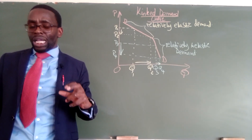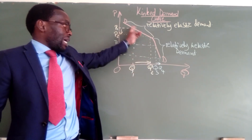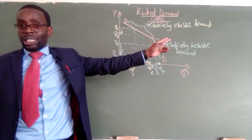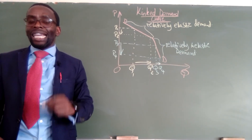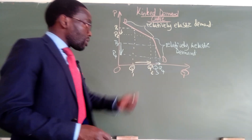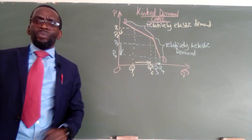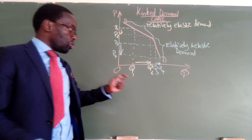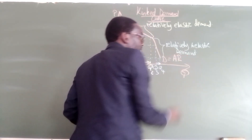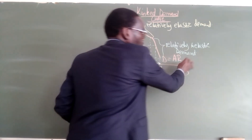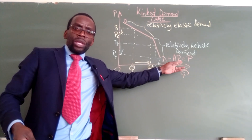So the demand curve faced by an oligopoly firm consists of two demand curves joined together: the top one giving us relatively elastic demand and the bottom one illustrating relatively inelastic demand. Our demand curve D is equal to average revenue (AR), which is equal to price.